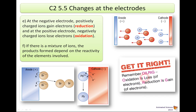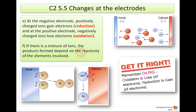Oxidation is loss and reduction is when you gain electrons. Now, the specification says that if there is a mixture of ions, the products formed depend on the reactivity of the elements involved, so we have to consider the reactivity series. You get that in the exam, but you must think carefully about how to use it.